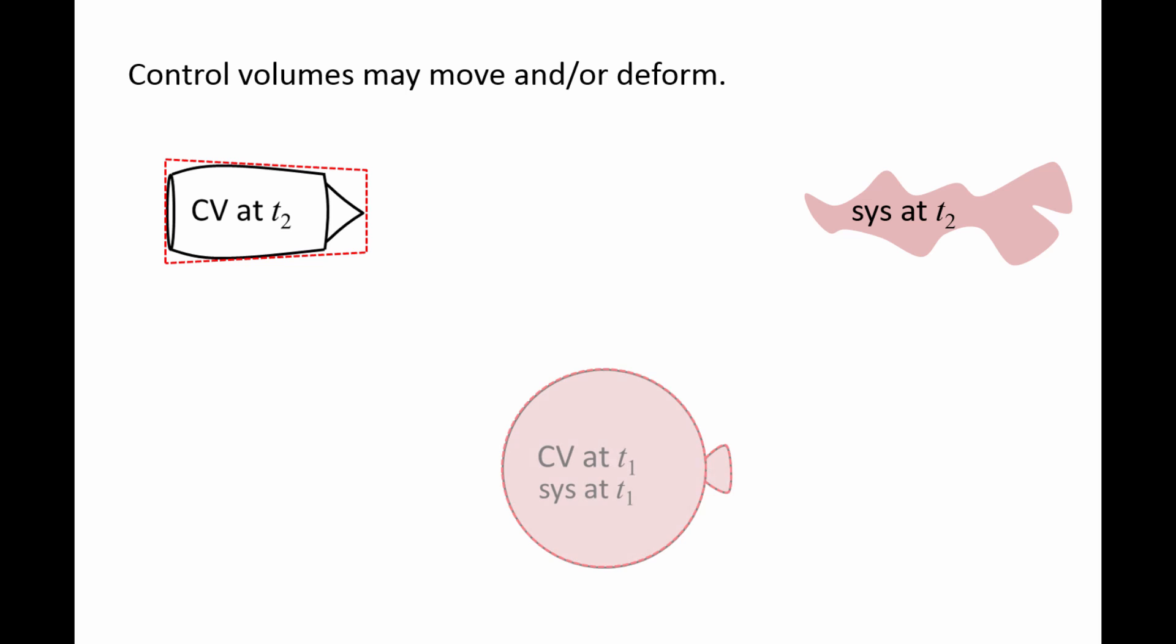On the bottom of the screen, we have an example where the control volume moves and deforms. A balloon is initially filled with air at time t1. The control volume is outlined by the surface of the balloon, and the system is shaded in pink. At this time, both the control volume and system occupy the same region of space.